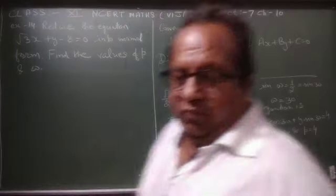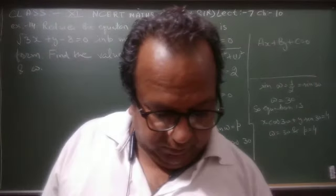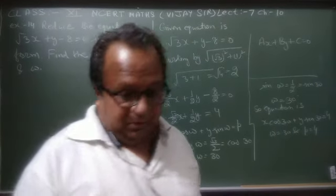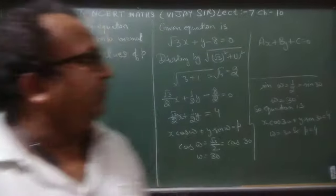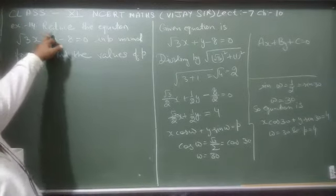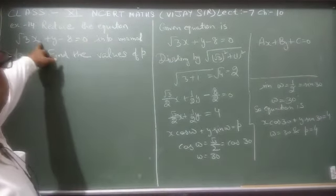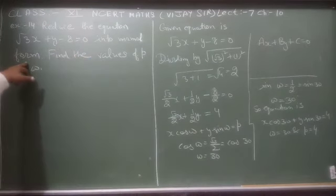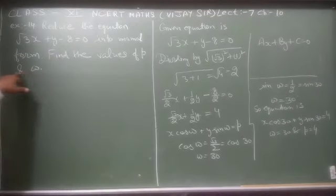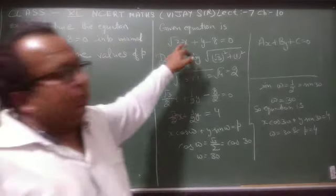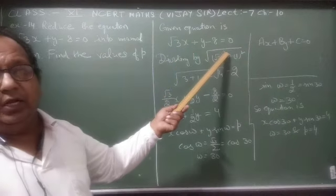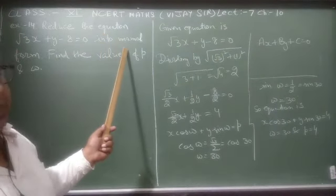Hi math students of Plus One. Today lecture 7, example number 14. We have to reduce the equation √3x + y - 8 = 0 into normal form and find the values of p and ω. यह equation दी हुई है, इसको हमने normal form में change करना है।